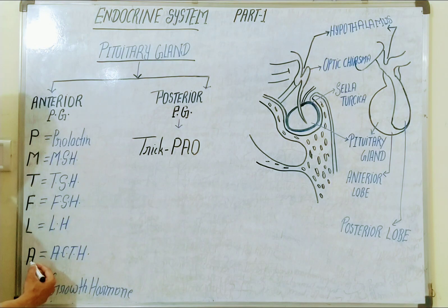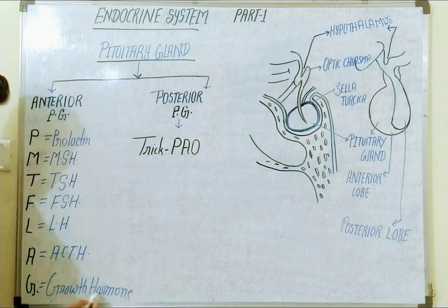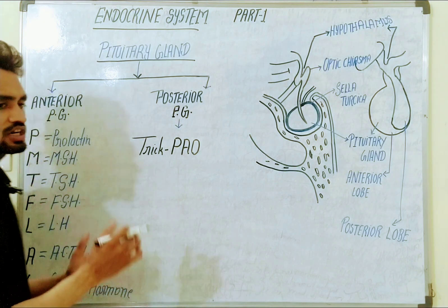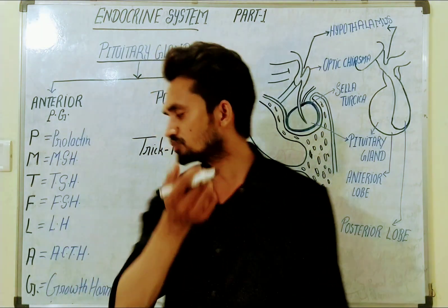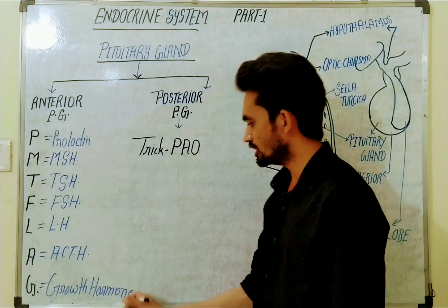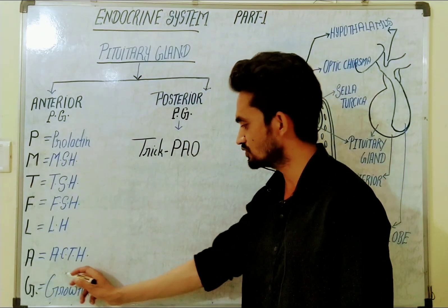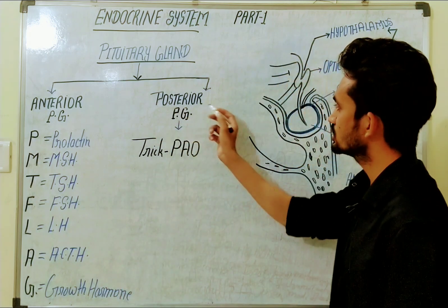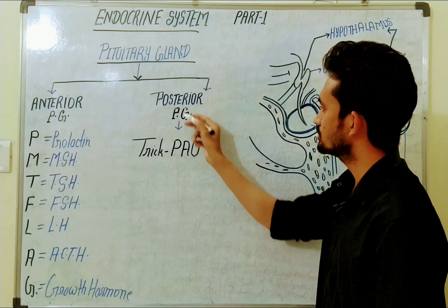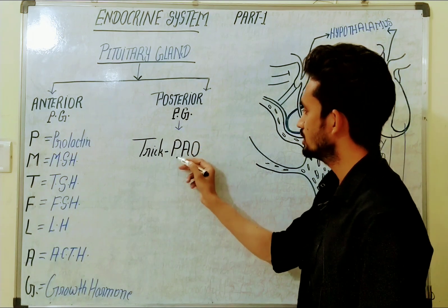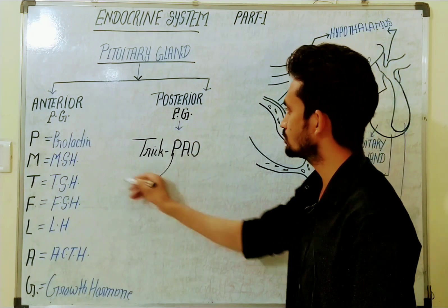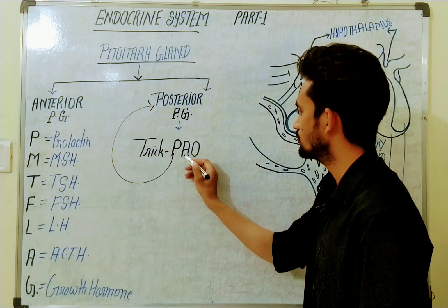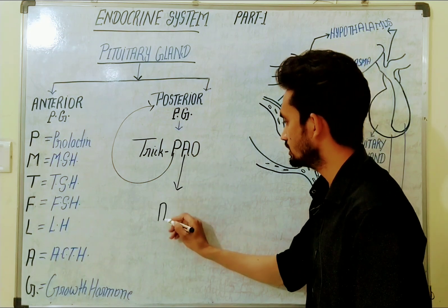It also secretes ACTH (adrenocorticotropic hormone) and GH, the growth hormone. The growth hormone is responsible for our physical, mental, and sexual growth, and is responsible for overall body development. If it is reduced, it affects mental and sexual growth.